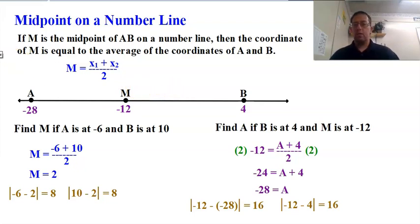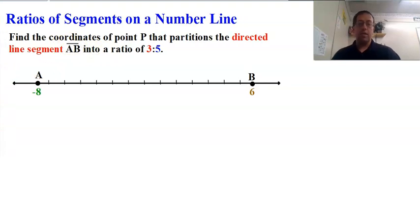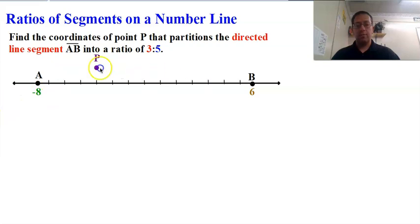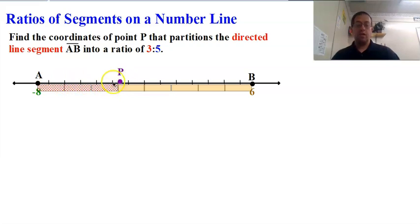Now for something a little more difficult — what if I don't want the midpoint, but want to split the segment into a different ratio, something that's not half and half? We're working with a directed line segment, meaning we go in a specific order. The directed line segment AB starts at A and goes to B. We want to split this in a ratio of 3 to 5, placing point P somewhere that splits it in that ratio. That means 3 equal pieces on one side and 5 equal pieces on the other — so P will be somewhere between negative 2 and negative 3.